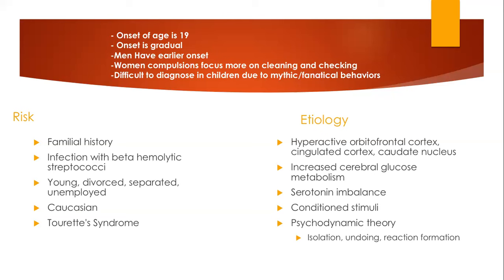Risk factors for the development of OCD include a family history, having an infection with beta-hemolytic streptococci as a child, being young, divorced, or separated, being unemployed, being Caucasian, substance abuse, having a dependent personality type, and typically having a somatic and paranoid predisposition.